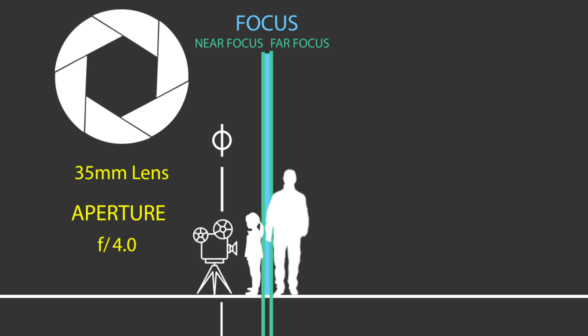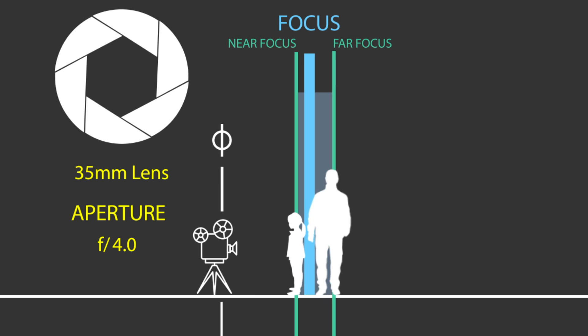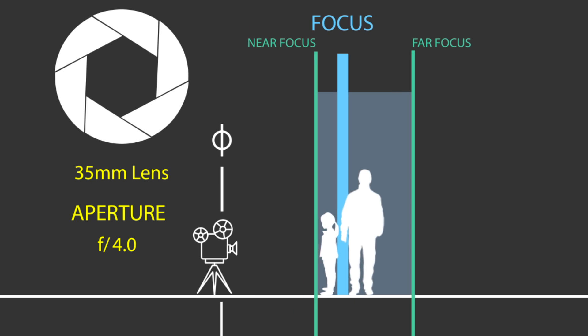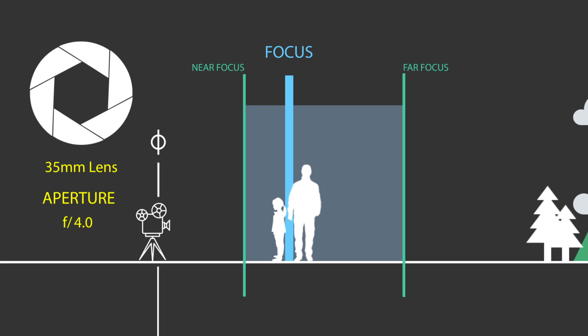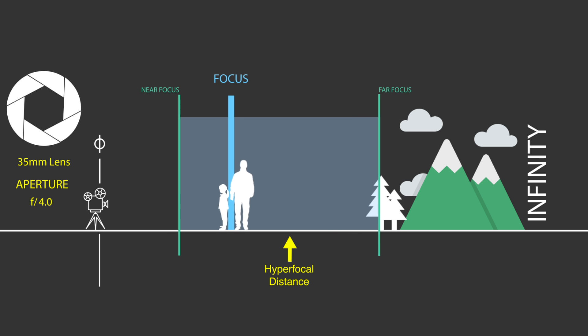When we talk about depth of field, it's important that we talk about hyperfocal distance. As we learned in previous lessons, depth of field is a range of focus within your frame. Anything in front of that range will be gradually out of focus, and anything beyond it will gradually be out of focus. However, there is a specific distance where the depth of field range is the largest it can possibly be, because the range goes to infinity — everything behind the focus point, along with some in front, is all in focus. This is called hyperfocal distance.